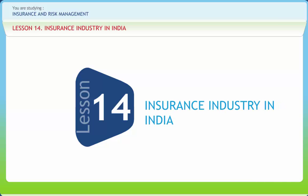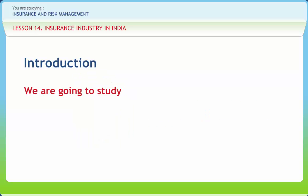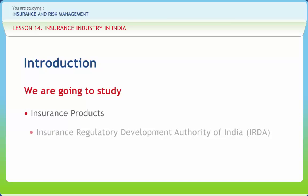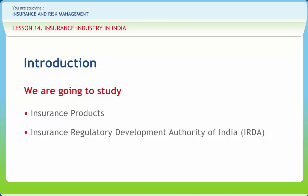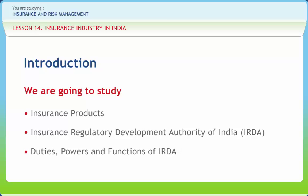Insurance Industry in India. The Indian Insurance Companies Act was passed in 1928. This act empowered the government of India to gather necessary information about the life insurance and non-life insurance organizations operating in the Indian financial markets. In this lesson, we will study insurance products, the Insurance Regulatory Development Authority of India (IRDA), and its duties, powers, functions, and investment norms.